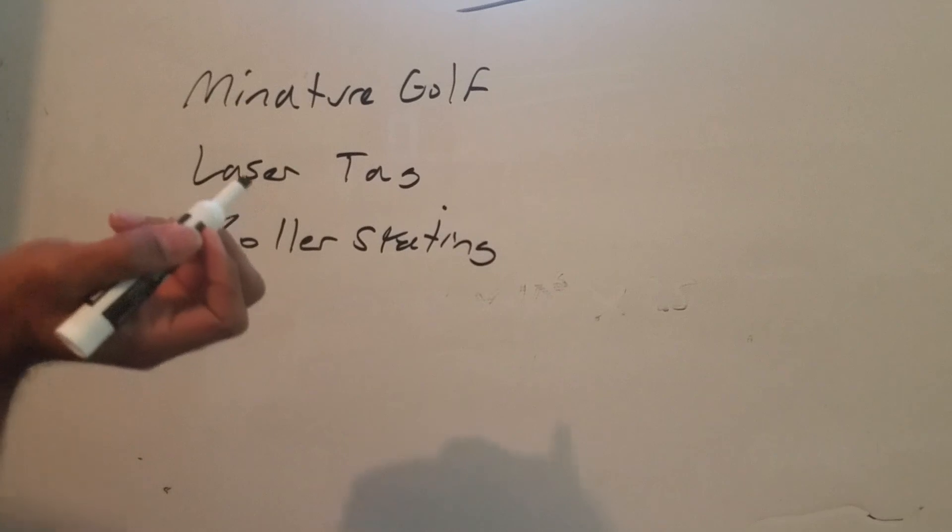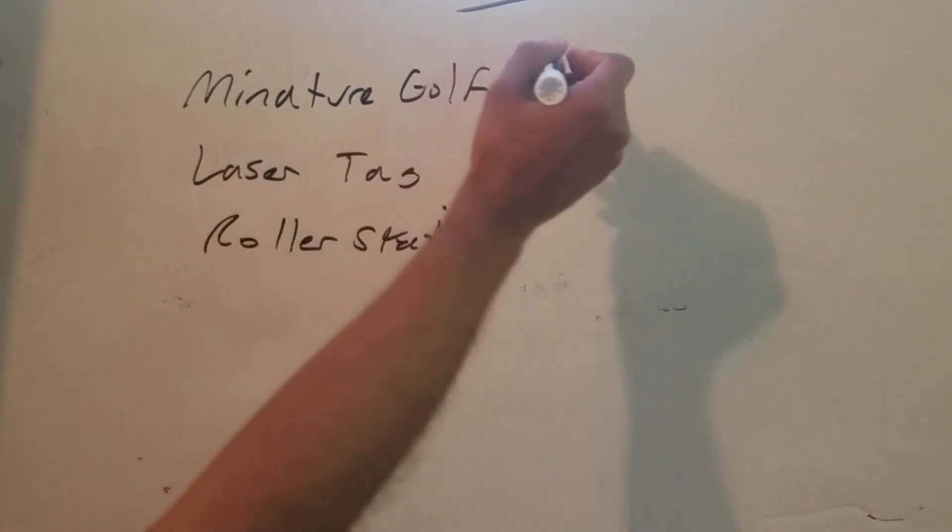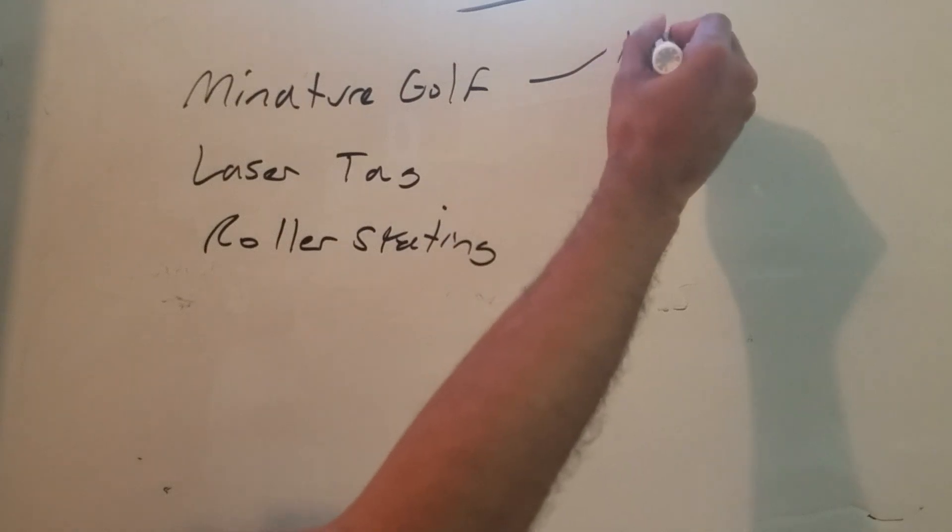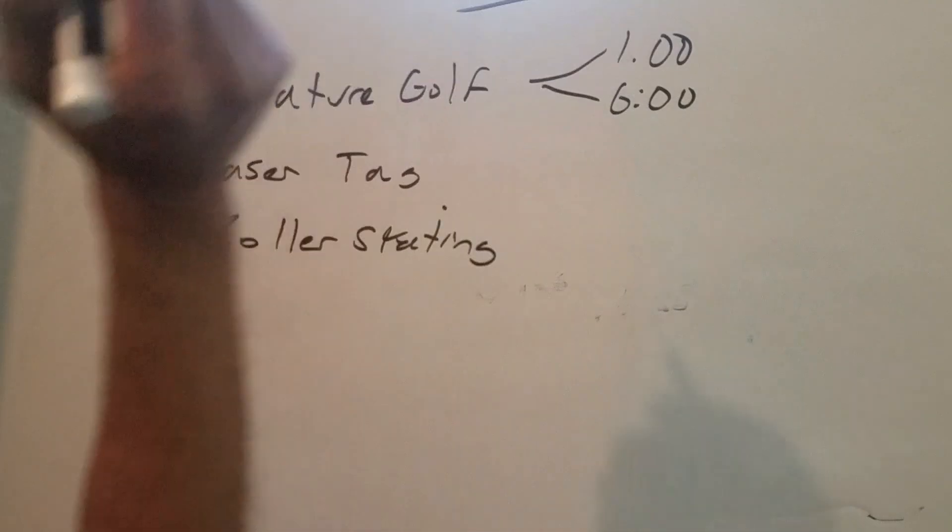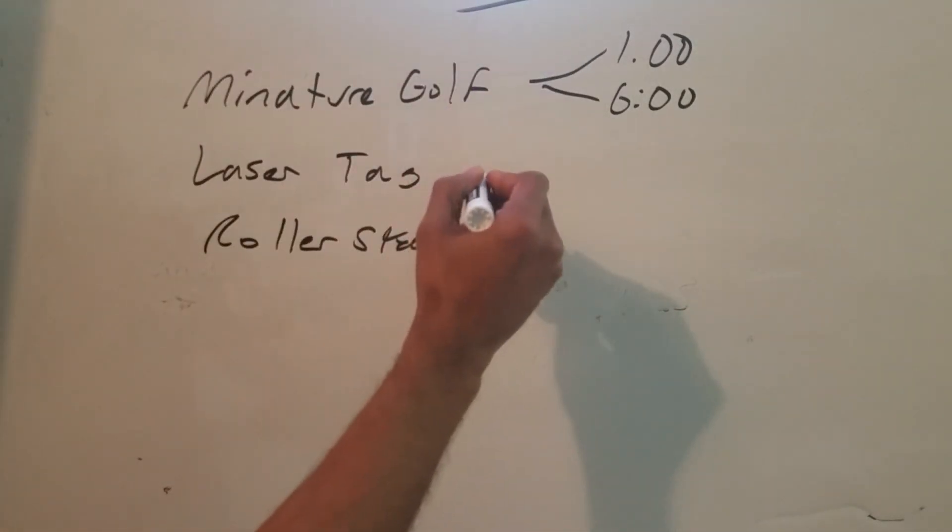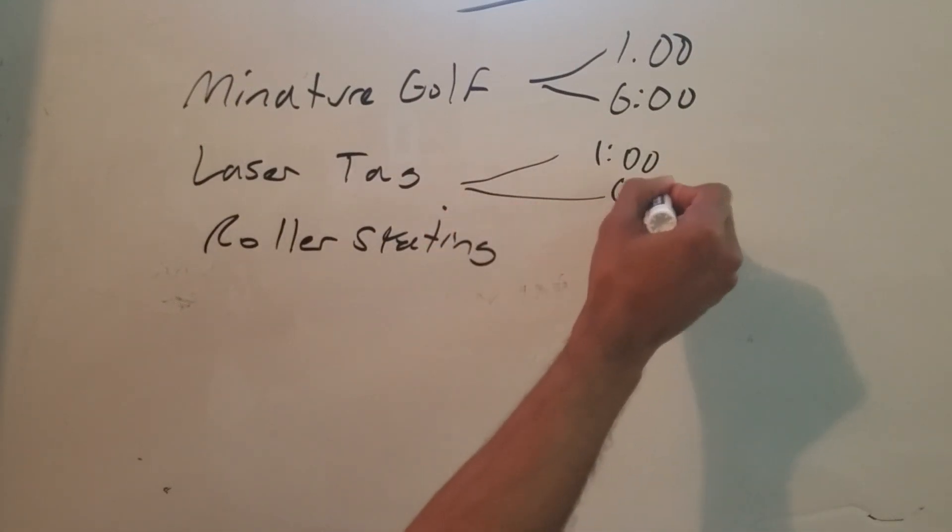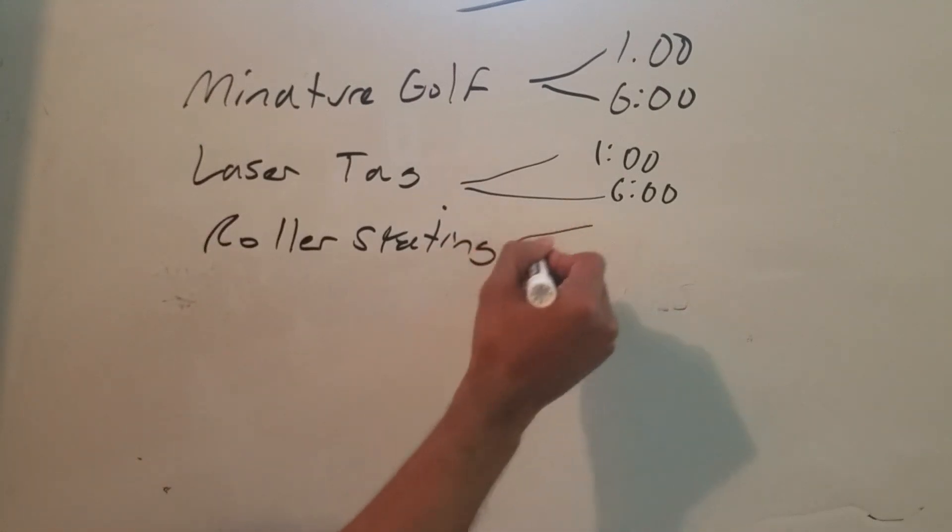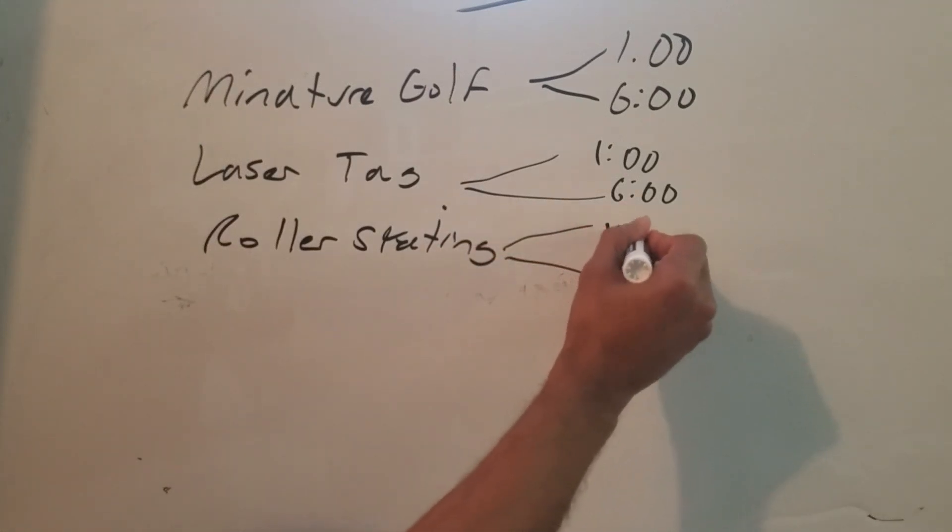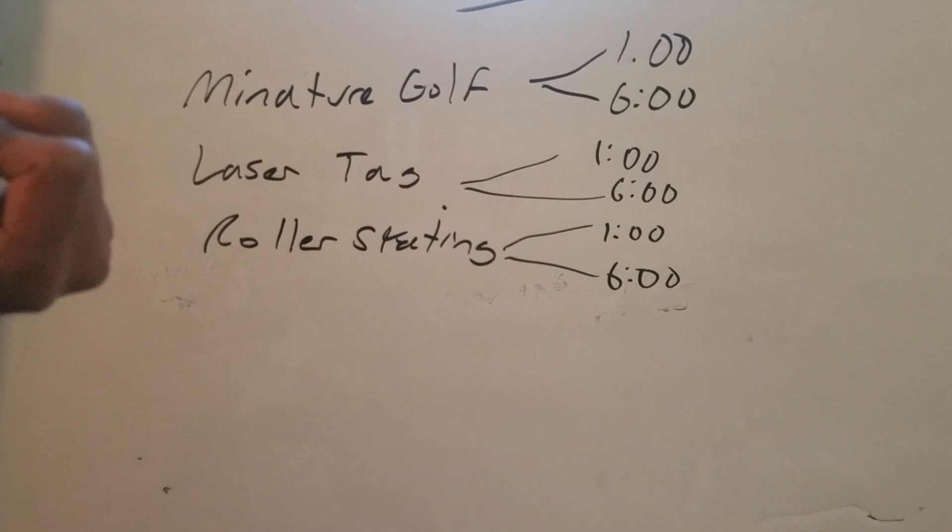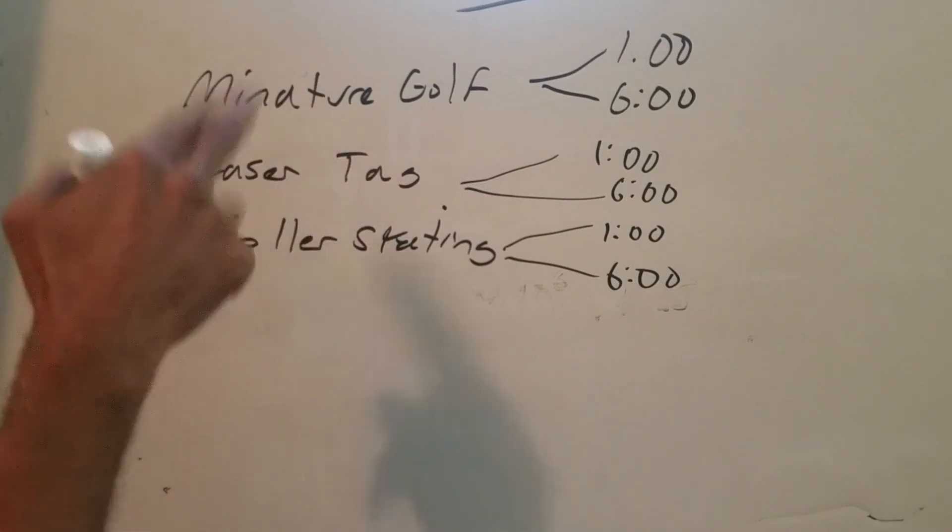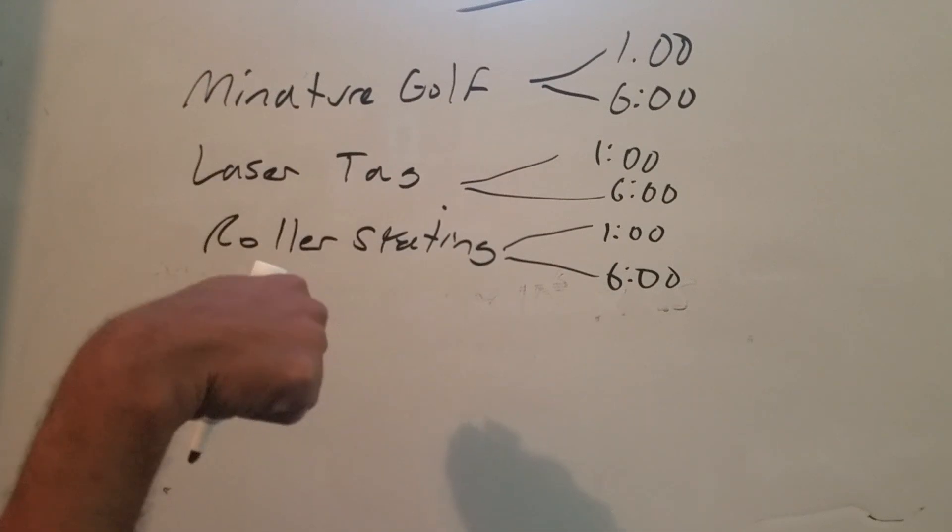So here's some possible things you could do at this party. You can play miniature golf at 1 o'clock or you could play miniature golf at 6 o'clock. You could also do laser tag at either 1 o'clock or 6 o'clock. And with roller skating you could also do roller skating at either 1 o'clock or 6 o'clock. So these are all the possible things you could do: miniature golf at 1, miniature golf at 6, laser tag at 1, laser tag at 6, roller skating at 1, roller skating at 6. Those are all the possibilities.